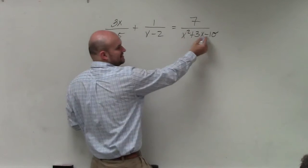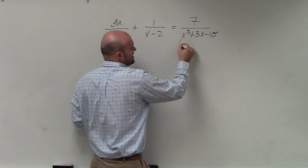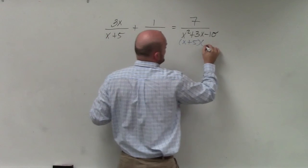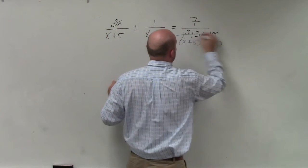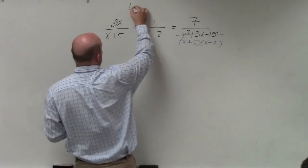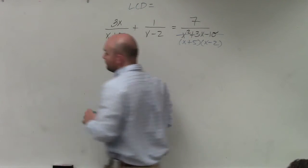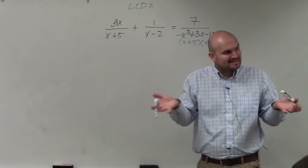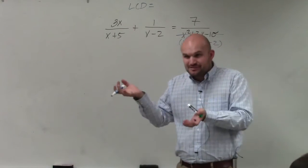In this one, I see that this is a factorable trinomial. And that's factorable to x plus 5 times x minus 2. That's very important to understand, because when I'm trying to identify my LCD, remember my LCD, all of my denominators all need to divide into that LCD.